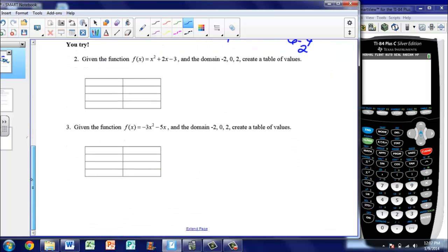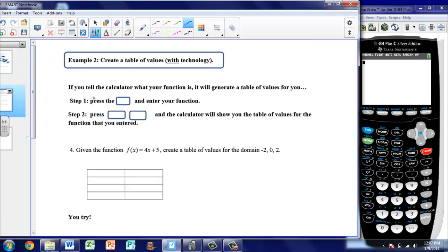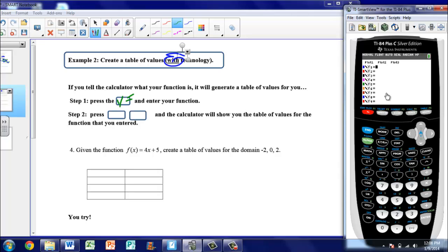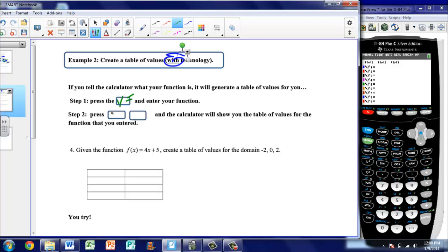There's a you try, so you'll do that in class tomorrow. If you turn to the next page, now it says create a table of values with technology. So now what we're going to do is use the calculator. It says if you tell the calculator what your function is, it will generate a table of values for you. The calculator will actually make the chart for you. So step one says press the y equals button and enter your function. So if I move over here to my calculator, I can press y equals. And then you should get this menu on your screen. Then that's where you'll enter your function. Step two will then be to press second graph, and the calculator will show you the table of values for the function you entered.